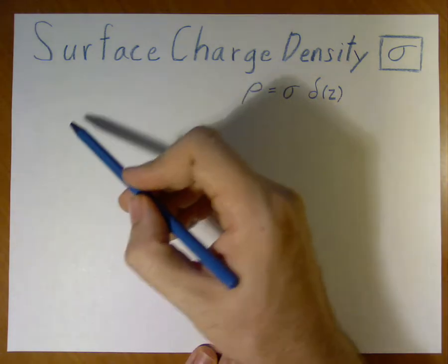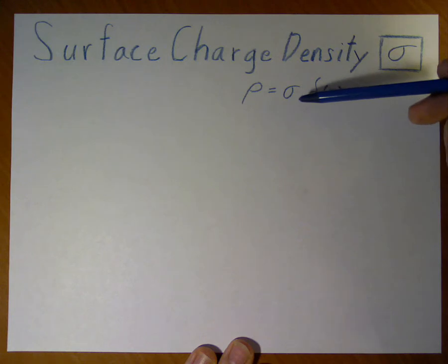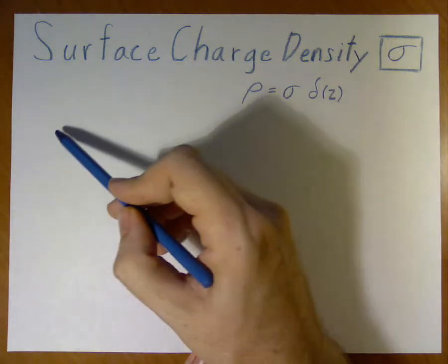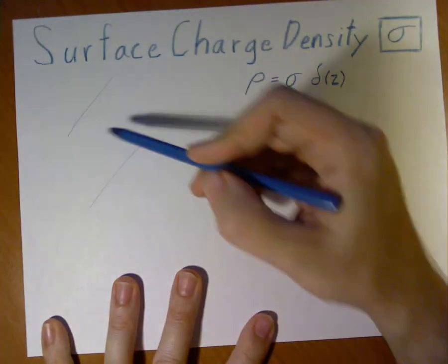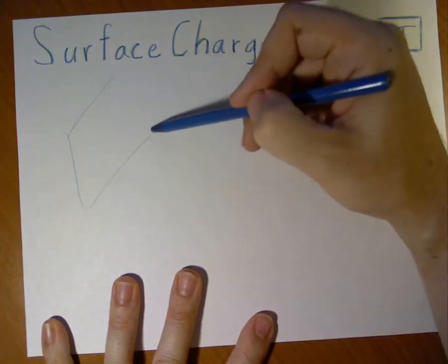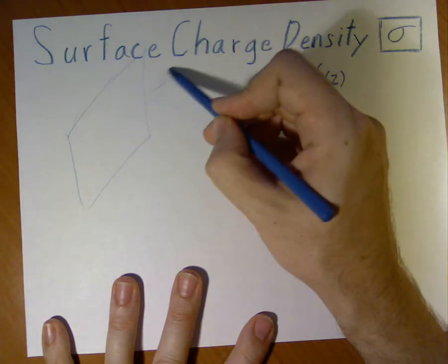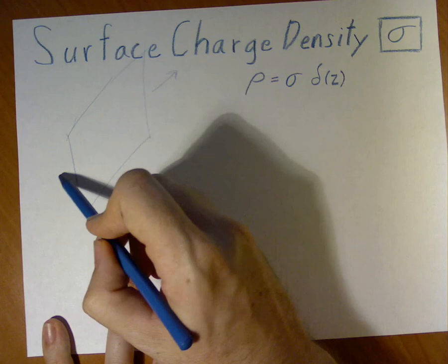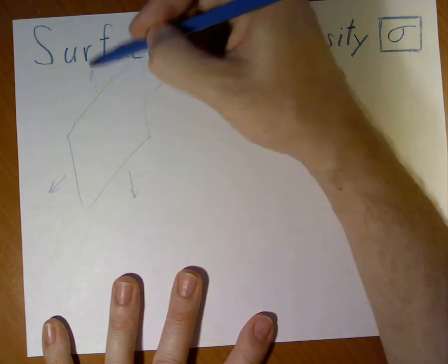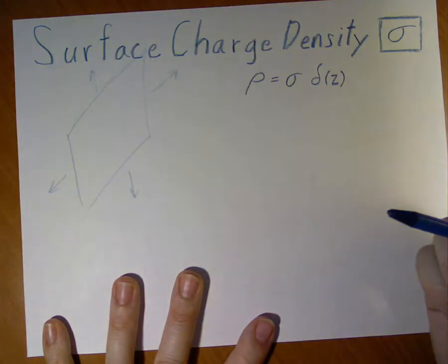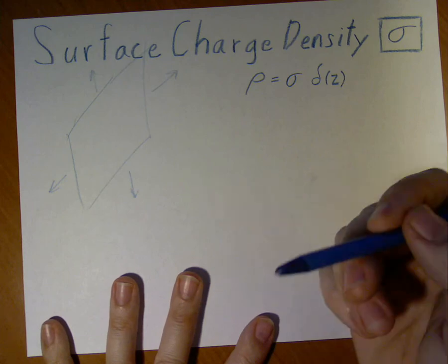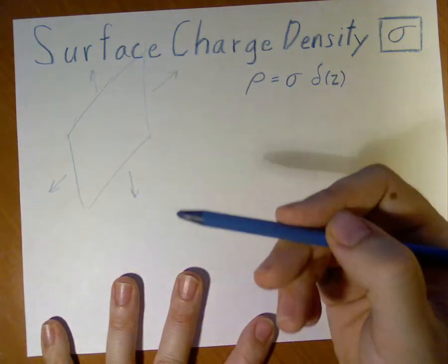We will draw out, in this case, the charge density of an infinite plane, which I will draw out like this. Now, of course, this plane goes outward in all directions, but I can't draw an infinite plane on a sheet of paper, so this will do it quite well.